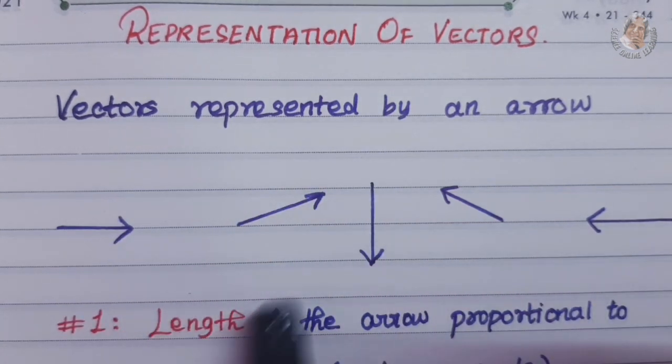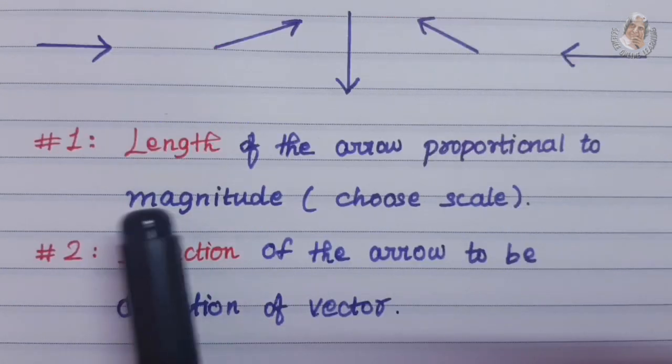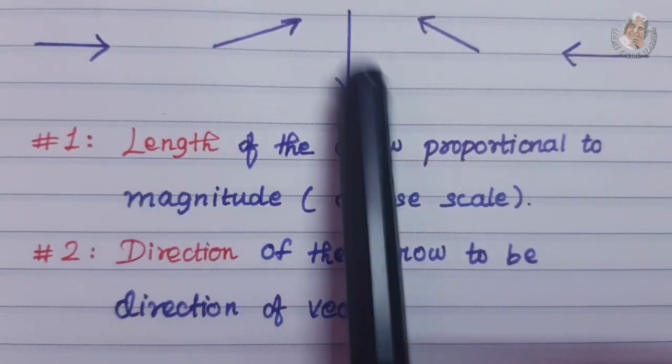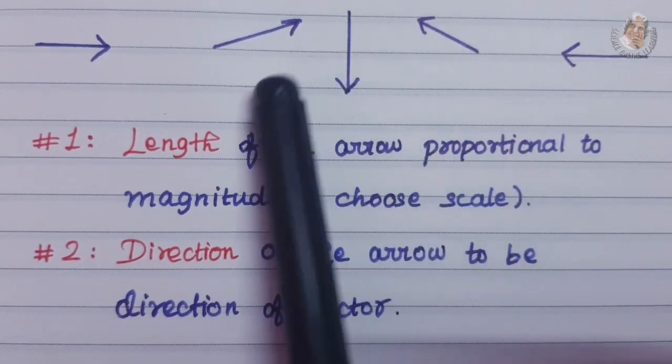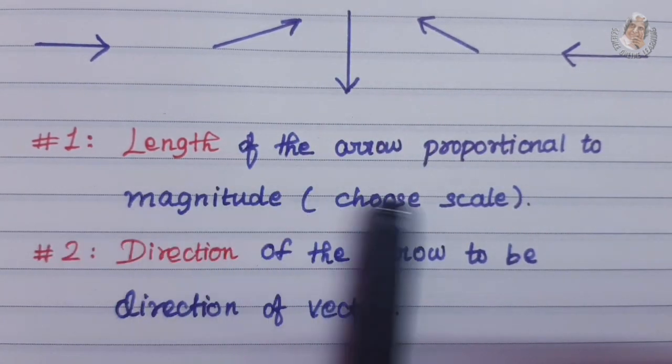The two conditions are important. Let's look at the first, length of the arrow. The length of the arrow represents the proportionality. The magnitude is the numerical value.